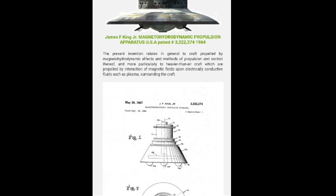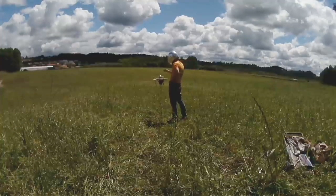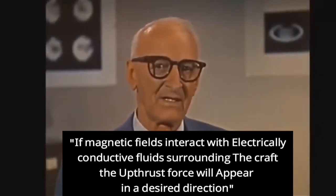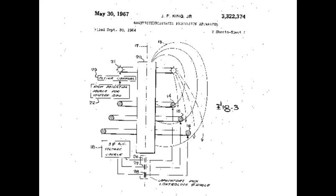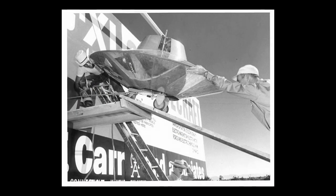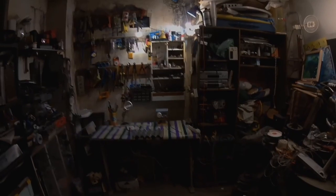Looking back to 1967, a man called James Eve King Jr. got a patent about the magnetohydrodynamic principles of his propulsion system. His principles were: if magnetic fields interact with electrically conductive fluids surrounding the craft, an upthrust force will appear in the desired direction. This guy was not well known, but his principles were almost identical to John Sear's principles and Alexis's principles.